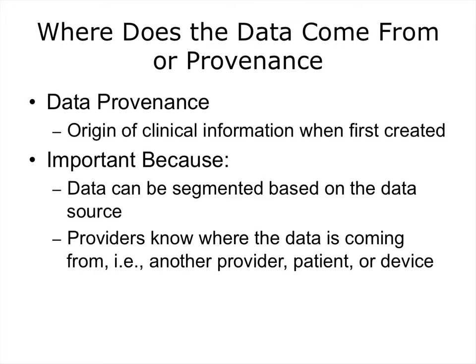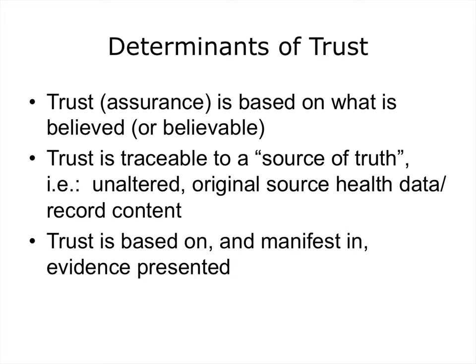There is more information on data provenance in the reference slide at the end of this lecture. Determinants of trust related to provenance are where trust or assurance for the data is based on what is believed or believable. When we trust the data, it is traceable to a source of truth so we know it was unaltered. We know what the original source was and what it said at the point it was created. Trust is always based on whatever evidence we have about where the data was created and what has happened to it since its time of creation.